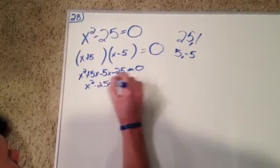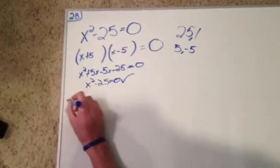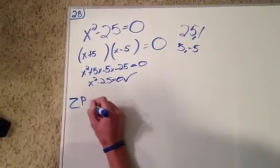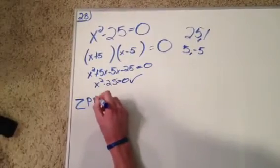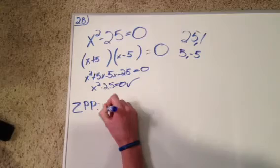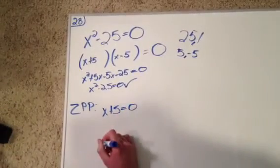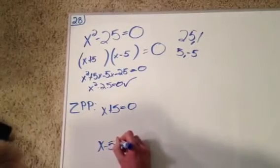We checked, and now we are going to use our zero product property to solve. We have x plus 5 equals 0, and x minus 5 equals 0.